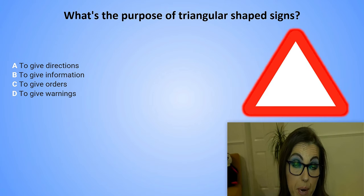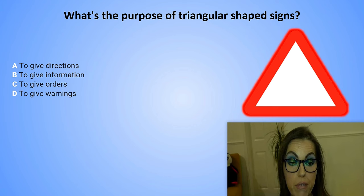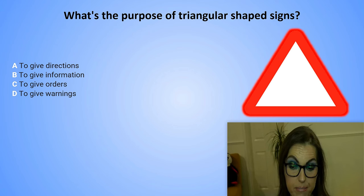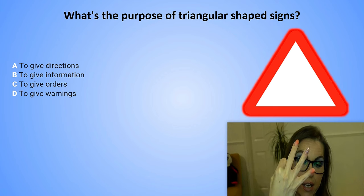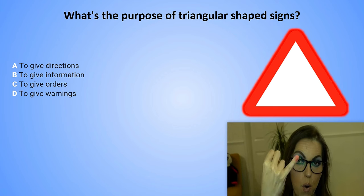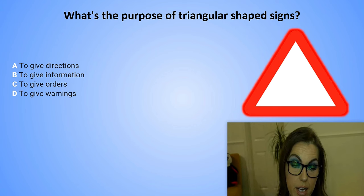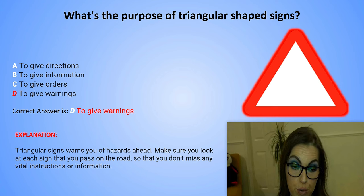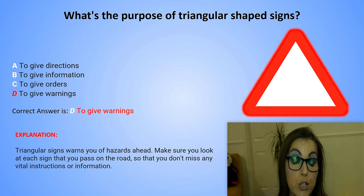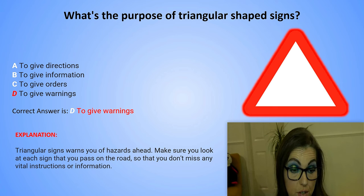What's the purpose of triangular shaped signs? A. To give directions. B. To give information. C. To give orders. Or D. To give warnings. The correct answer is D. To give warnings. Explanation: Triangular signs warn you of hazards ahead. Make sure you look at each sign that you pass on the road so that you don't miss any vital instructions or information.